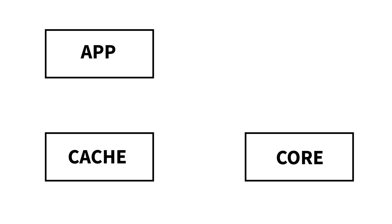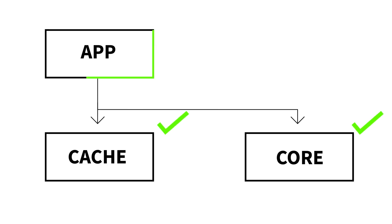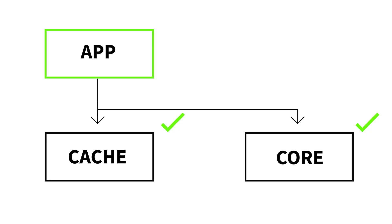The first method is write through. When an application writes to the OpenCast device, it writes to both the cache device and the core device, and the application doesn't see that write as complete until both acknowledge. Therefore you get the write speed of your back-end core device, but you can guarantee that your write also got placed in the cache. This will accelerate your reads — write through is a read acceleration, not a write acceleration.